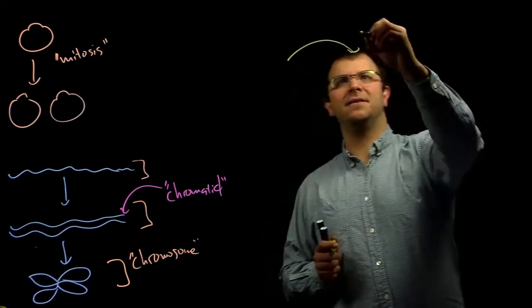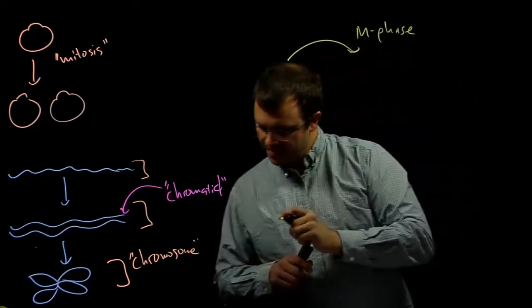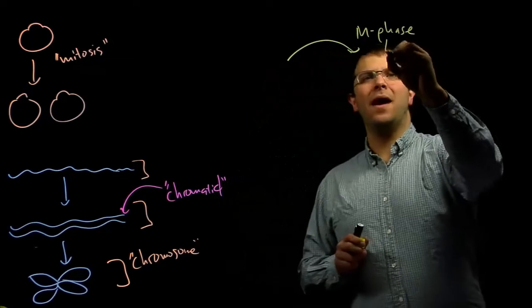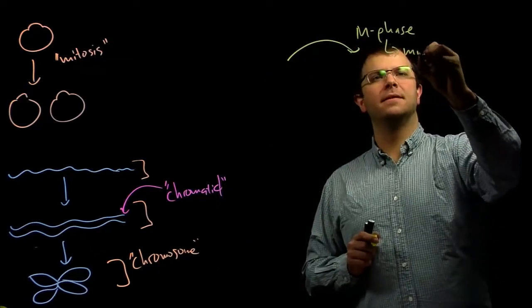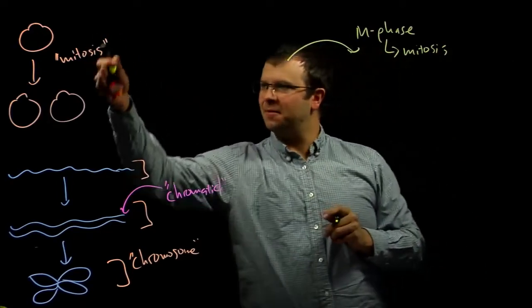There's one part of the cell cycle called M phase. And M phase is where mitosis happens. This is where the one cell becomes two cells.